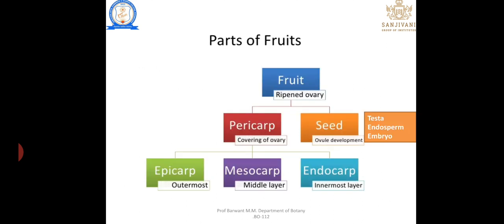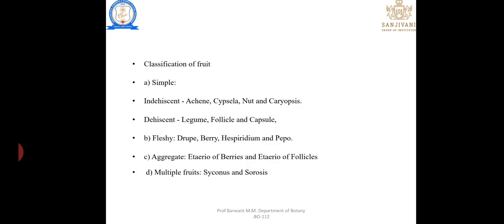The parts of the fruit are: pericarp and seed. The seed is classified into testa, endosperm, and embryo. The pericarp is classified into epicarp, mesocarp, and endocarp. The classification of fruit — fruits are classified into four types: simple, fleshy, aggregate, and multiple.